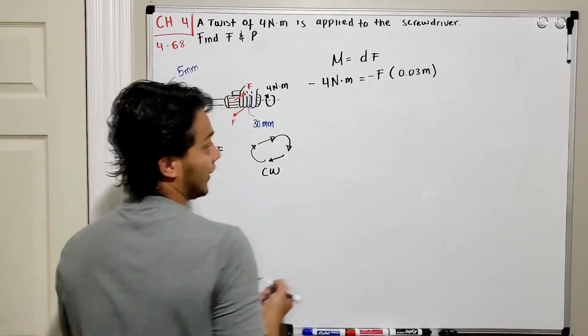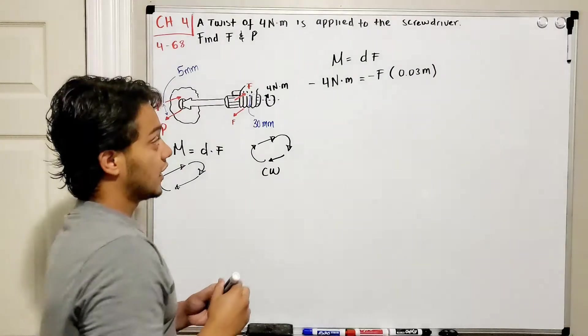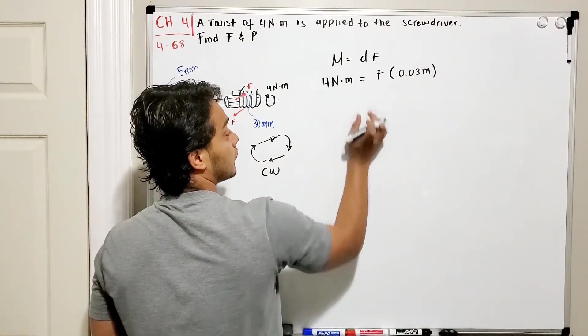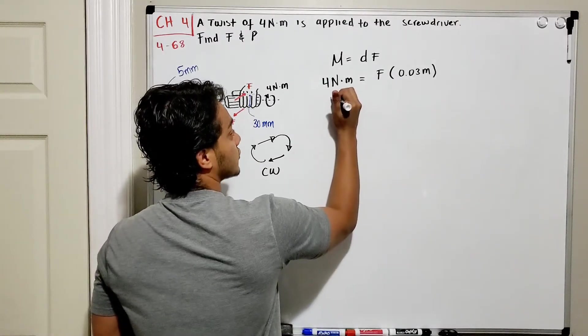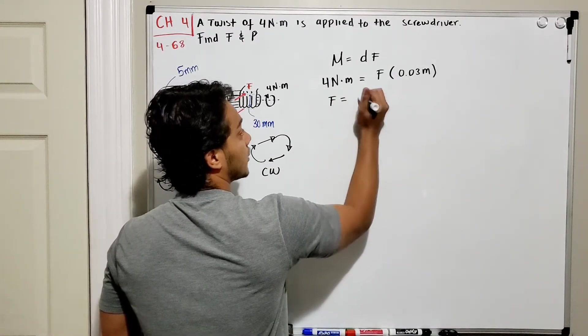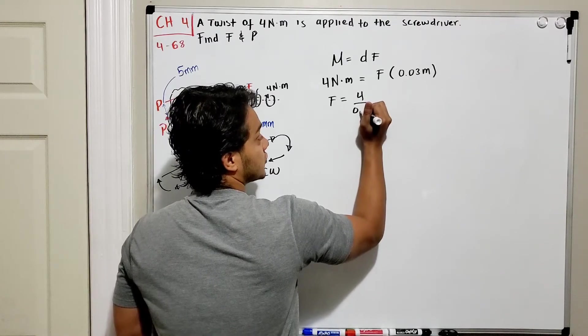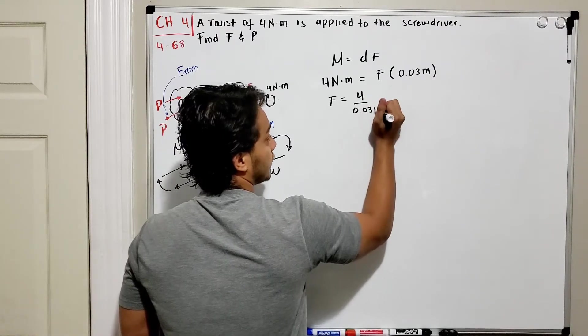Now this moment produced by this force is going to be clockwise, so I put a negative. And then these two negatives will cancel out so both of them are positive, basically. And we can solve: F is going to be equal to 4 newtons divided by 0.03 meters.